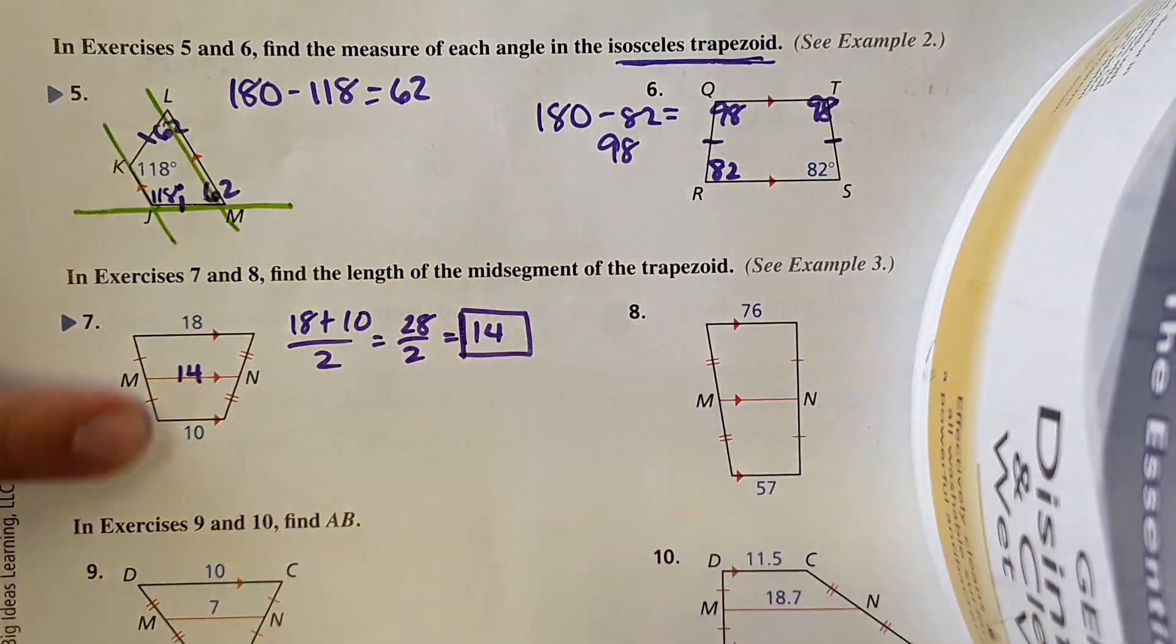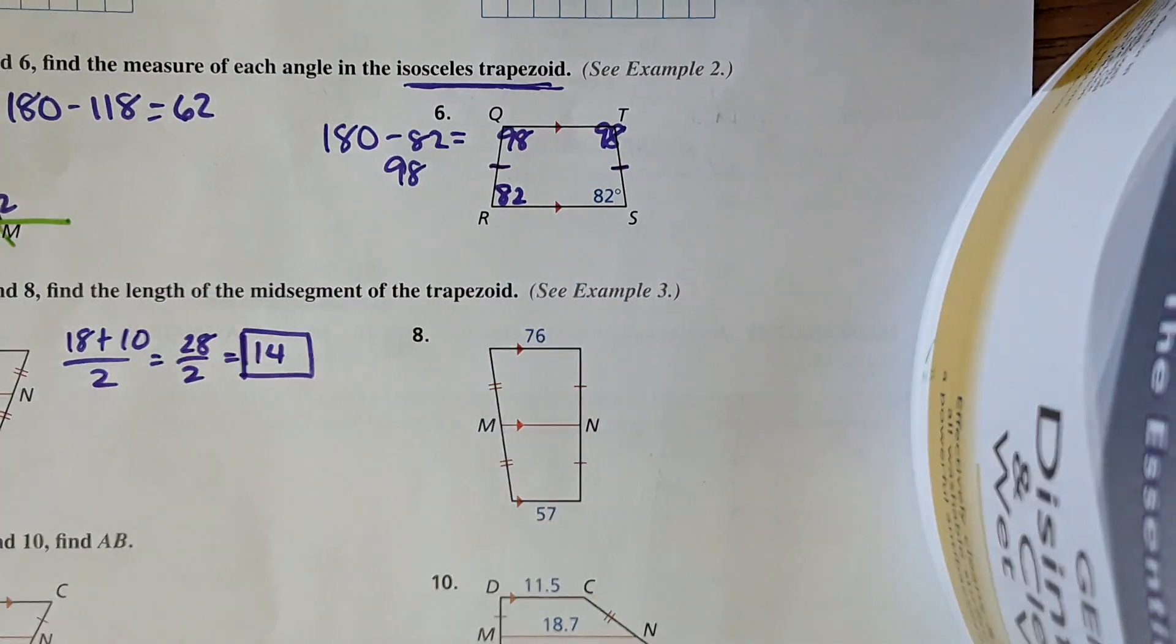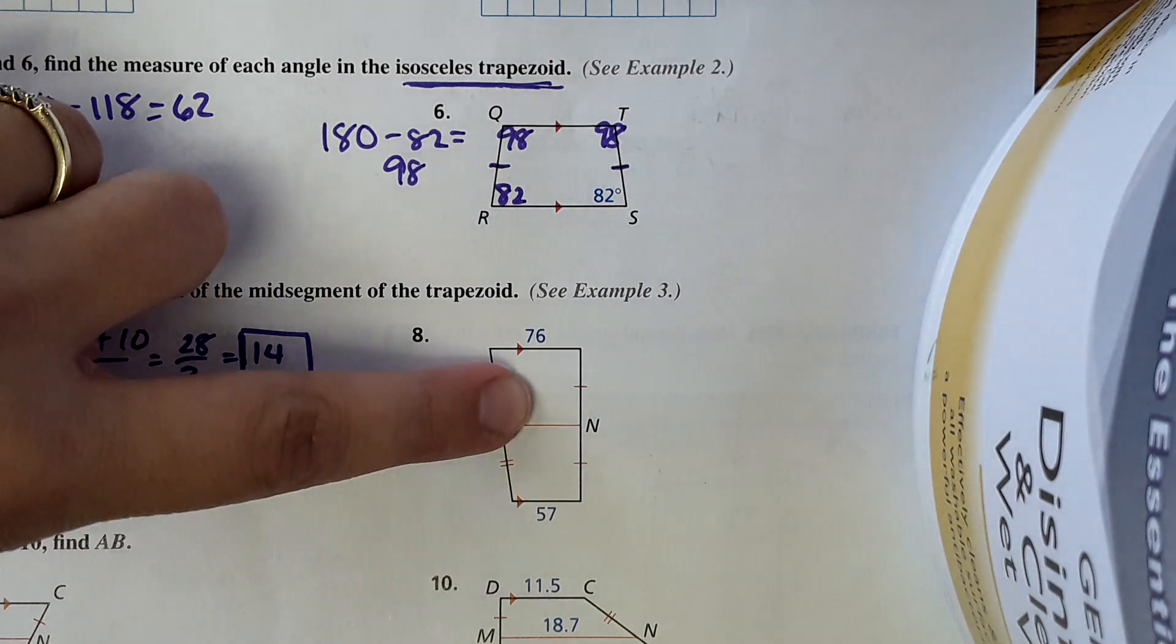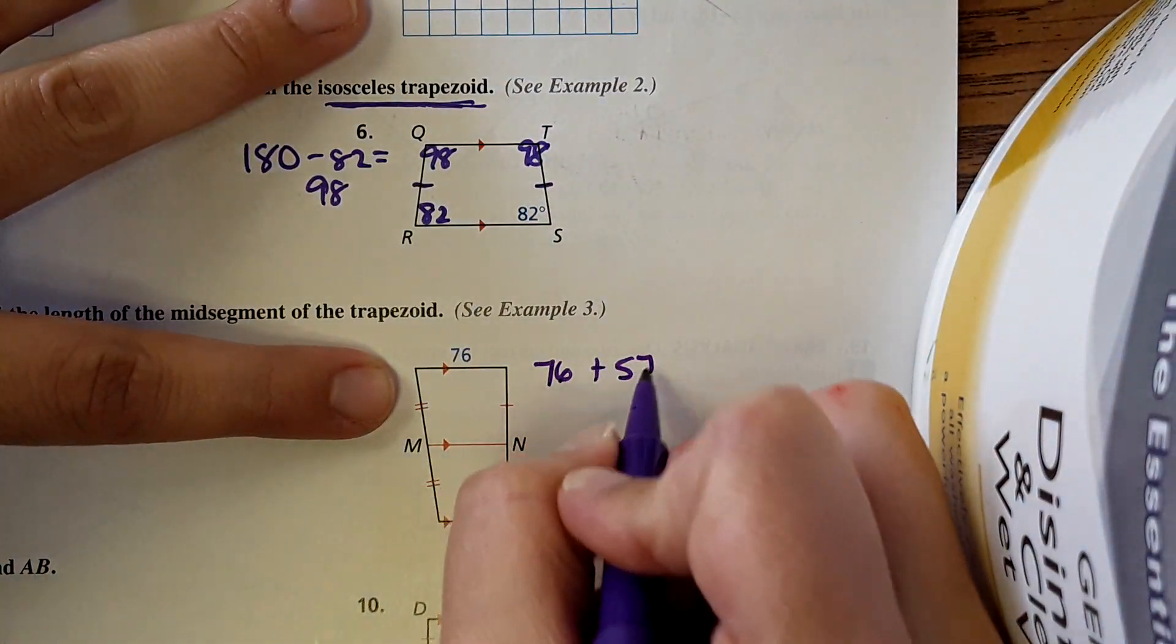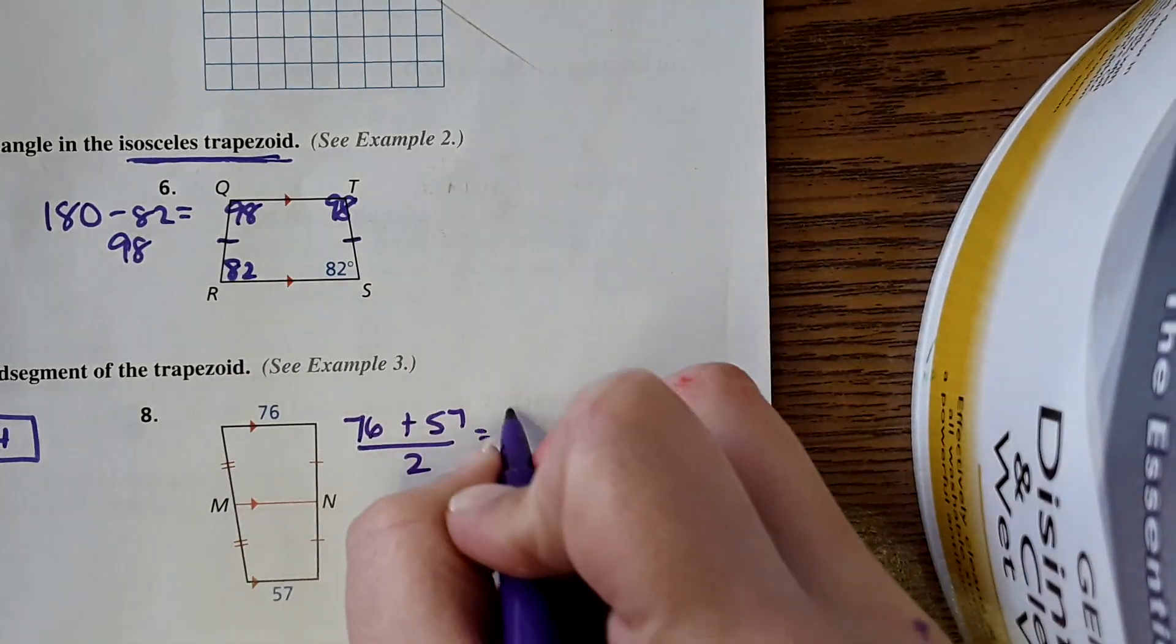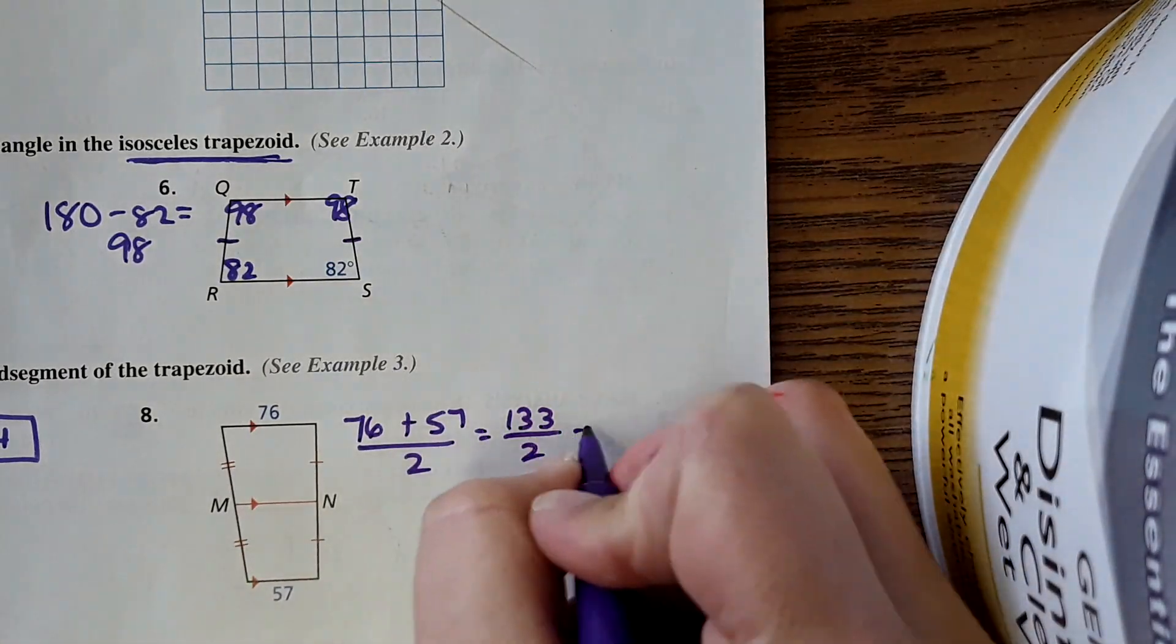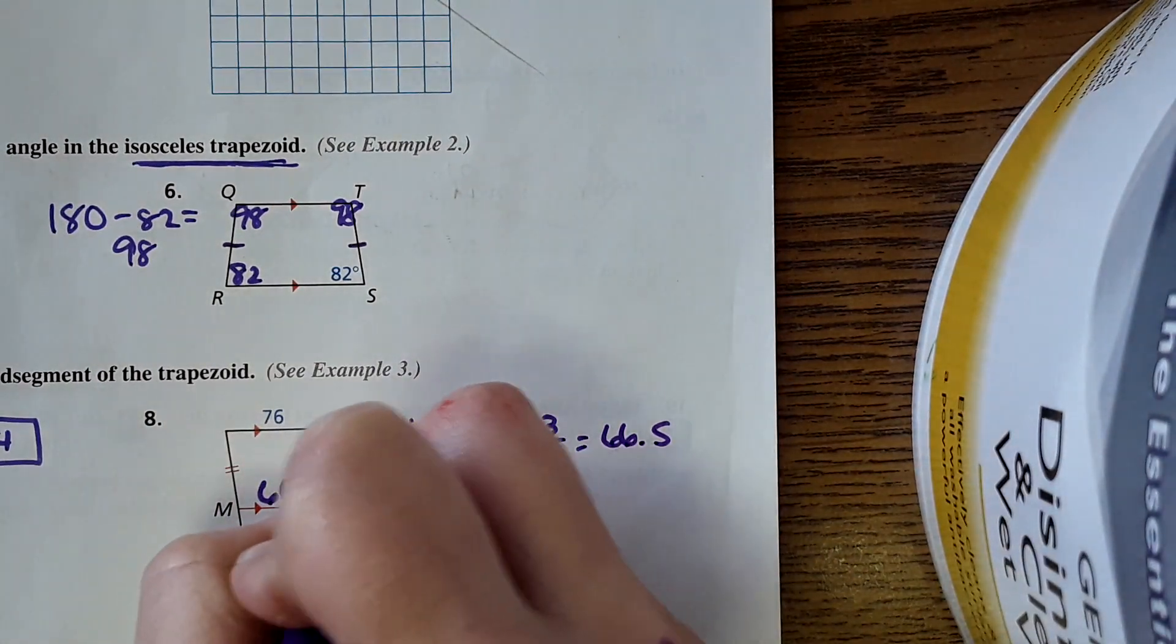Number eight, same idea, except it's harder to see the middle there. So what I would recommend doing is 76 plus 57, divide that by 2, and that will come 133 over 2, which does come out to a decimal, 66.5. So this here is 66.5 units.